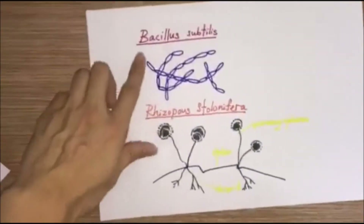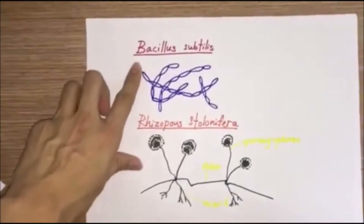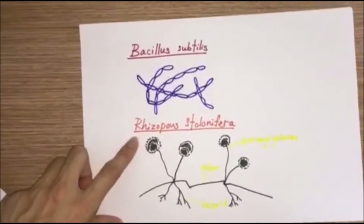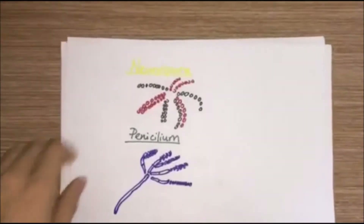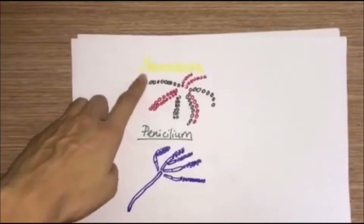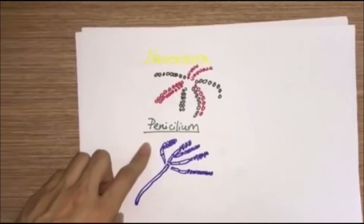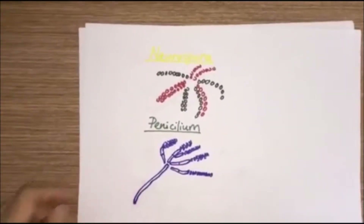The common microorganisms found on bread are bacteria, Bacillus, Rhizopus stolonifer, Neurospora, and Penicillium.